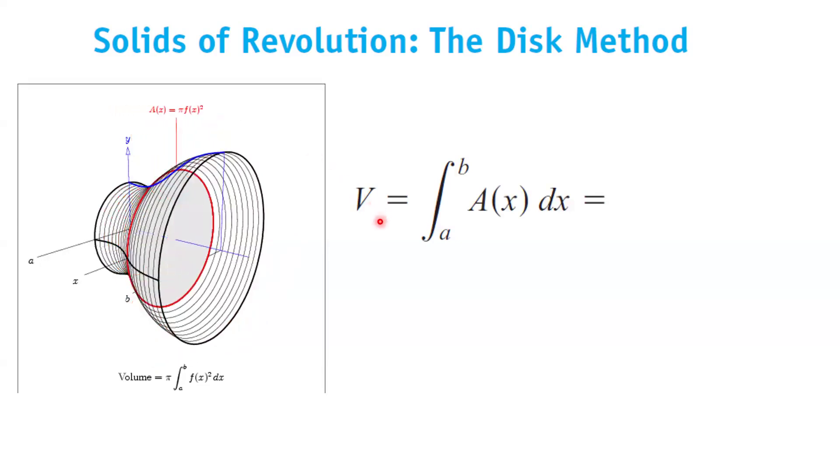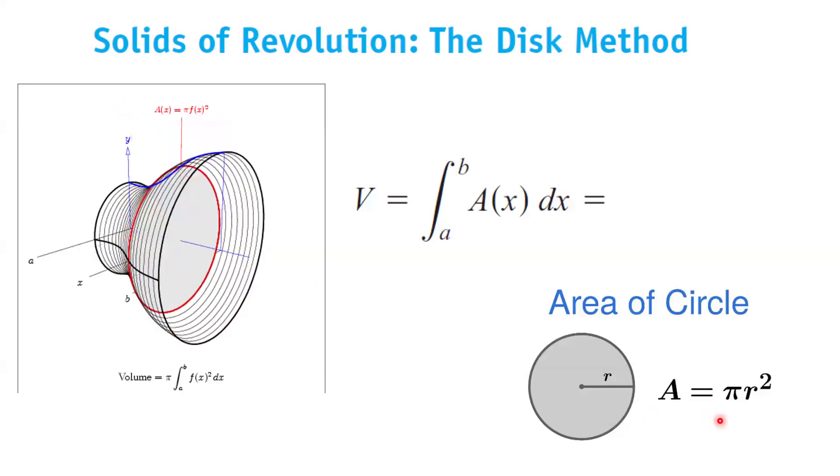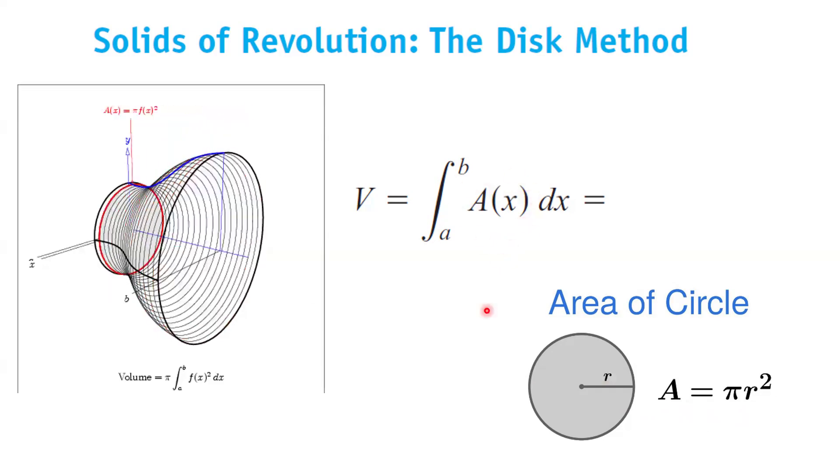The volume, as you remember, is the definite integral of the area of the cross-section with respect to the x-axis, as x ranges between a to b. Since the cross-section is a circle, and we know that the area of a circle is πr², we're going to substitute that right here.